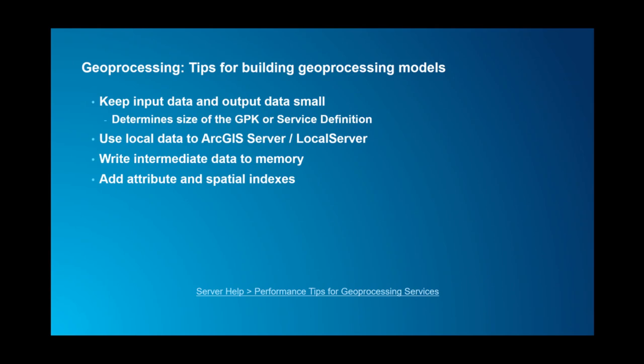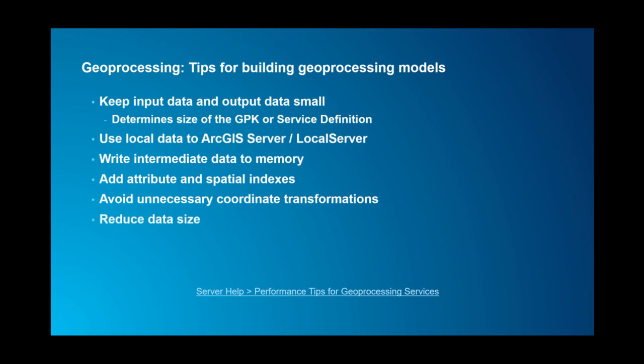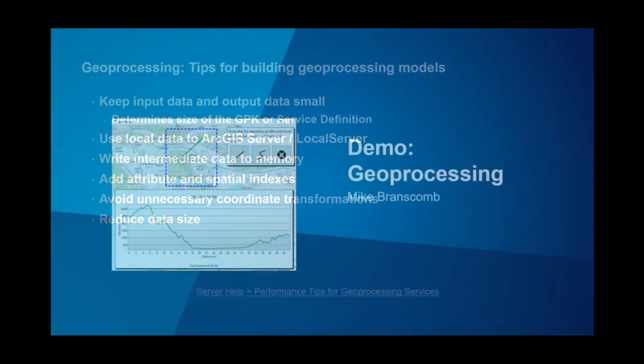Also add attribute indexes if you're doing any query selections by attribute. Avoid unnecessary coordinate transformations — make sure input data, output data, and project data are ideally all in the same coordinate system to avoid transformations on each execution of the geoprocessing service. And reduce data size if you can, as loading less data into memory during execution will improve performance.